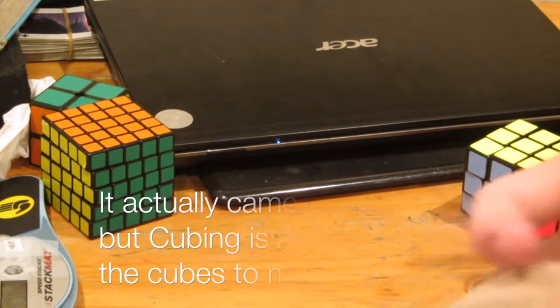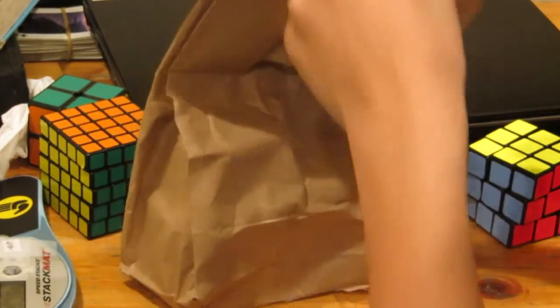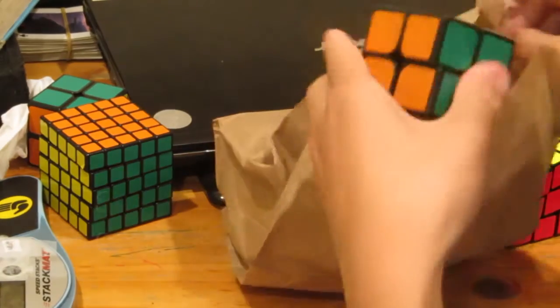So I just came from a cubing event. Why don't I open it up? So what's in here? Dayan 2x2.